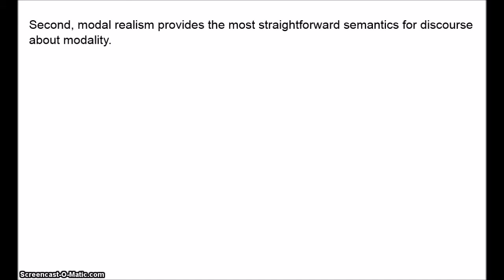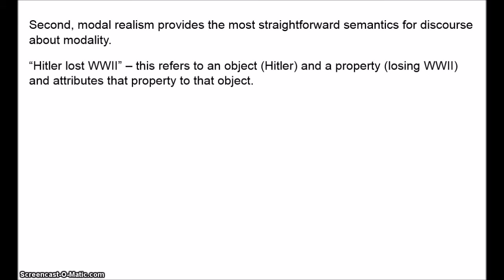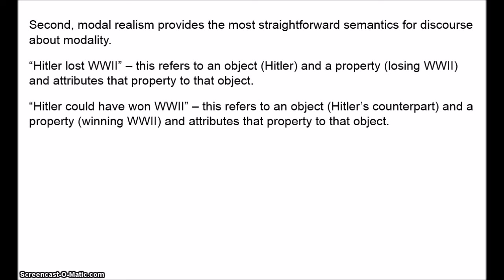Semantics is concerned with meaning, reference, truth, and things like that. Modal realism allows us to analyse the meaning, reference, and truth conditions of modal statements in basically the same way that we analyse non-modal statements. Take a simple non-modal statement: Hitler lost World War II. What does this mean and what makes it true? It refers to an object — namely Hitler — and a property — namely losing World War II — and it attributes this property to the object. Now consider: Hitler could have won World War II. On Lewis's analysis, what this means is that a certain counterpart of Hitler did win World War II. So this statement can be interpreted as referring to an object — namely one of Hitler's counterparts — and a property — namely winning the counterpart of World War II. It refers to an object, it refers to a property, and it attributes that property to that object.